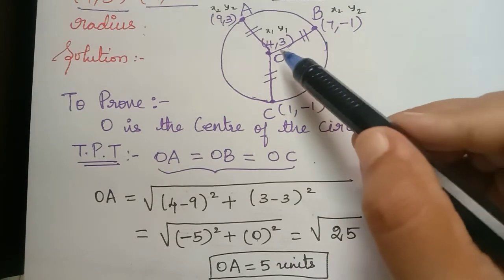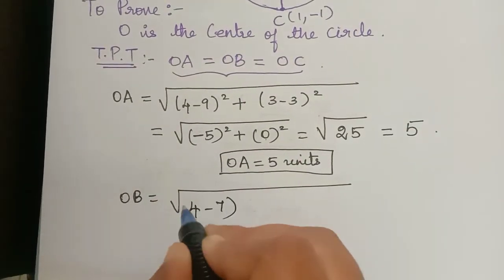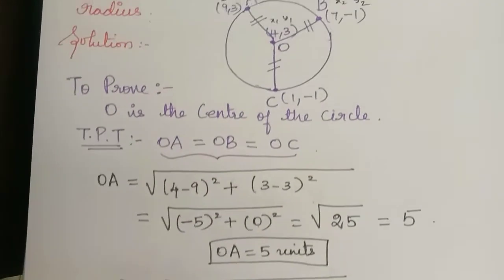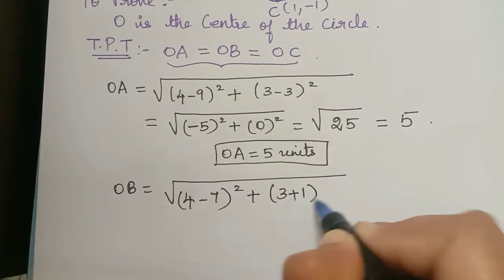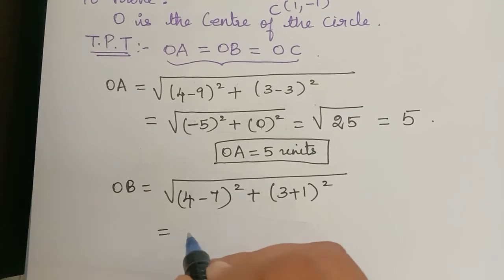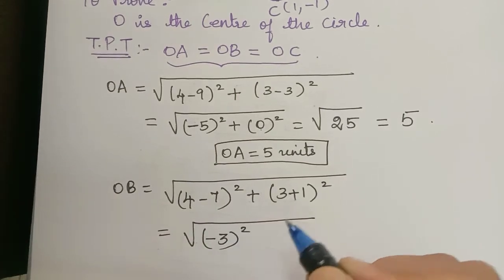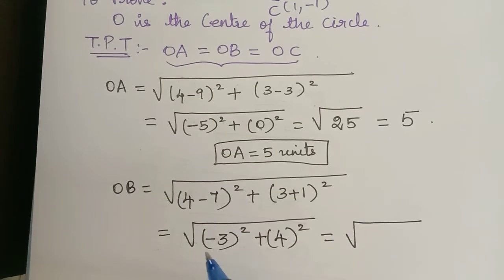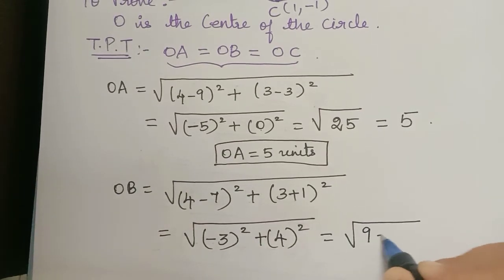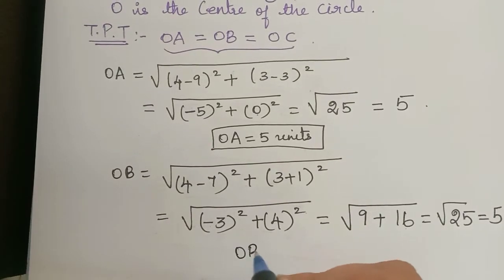So OB is equal to the square root of (4 minus 7) squared plus (3 minus of minus 1) squared. Now 4 minus 7 is minus 3, and 3 minus of minus 1 becomes 3 plus 1 which is 4. So that is equal to square root of (minus 3) squared plus 4 squared, which is square root of 9 plus 16, which is square root of 25, which equals 5. Therefore OB is equal to 5 units.